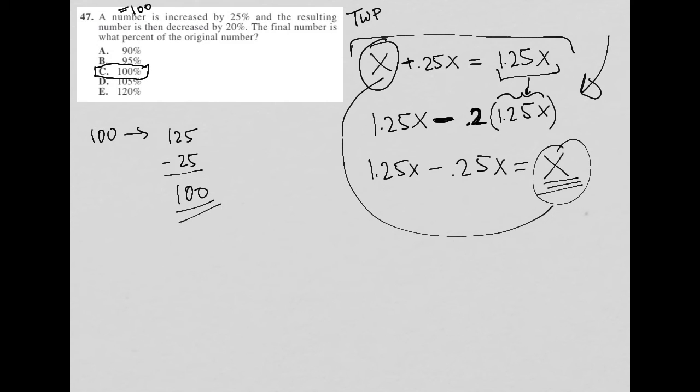The final number, this 100, is what percent of the original number? Well, it's 100% of it. It matches the original number. It is 100% of the original number. So here we use decimals to find our answers.